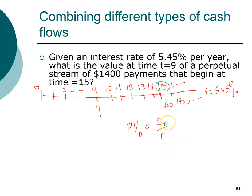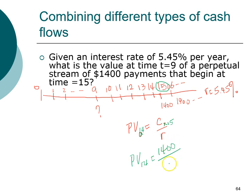Instead of year one, we have year 15. If we start withdrawing money in year 15, we must deposit the money into the bank in year 14 so it can start earning interest. Remember, we create a perpetuity by putting money in the bank, letting it earn interest for one year, and then starting withdrawals. So if we want to start taking $1,400 out in year 15, we put the money in the bank in year 14. We can therefore find the value of this perpetuity as of year 14: the payment is $1,400 and the interest rate is 5.45%, so converting to a decimal gives us a present value of $25,688 as of year 14.